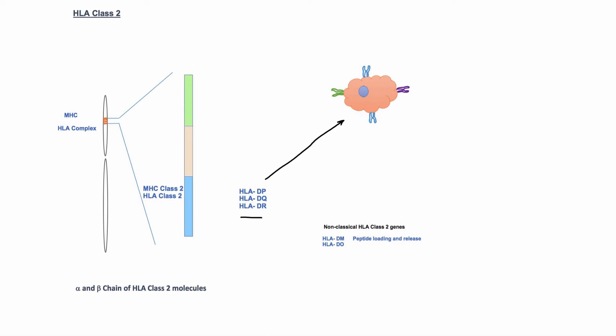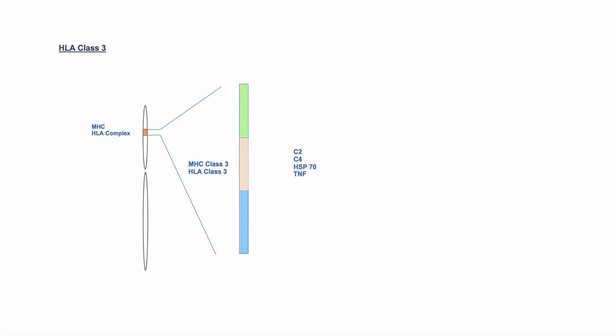There are also two non-classical HLA genes in this region that are HLA DM and DO. These molecules are not expressed on cell surface. These molecules help in peptide loading and release on HLA class 2 molecule in cell.